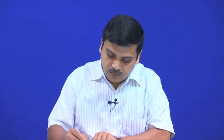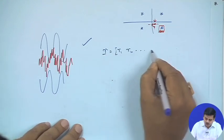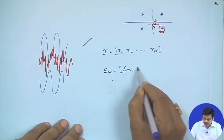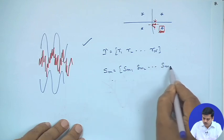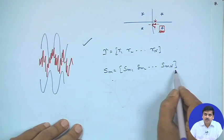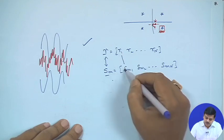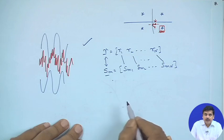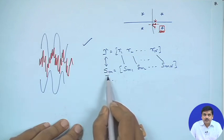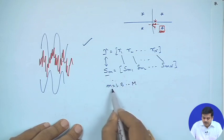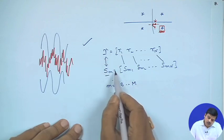We can think of the received vector r as (r_1, r_2, ..., r_n) produced by the output of the matched filter or correlator, and S_m as (S_m1, S_m2, ..., S_mn), which are the pre-known components of the signal. To calculate the distance between these two vectors, take the difference, square it for all terms, and add them together. You then vary m from 1 to M and choose the m that minimizes this distance.